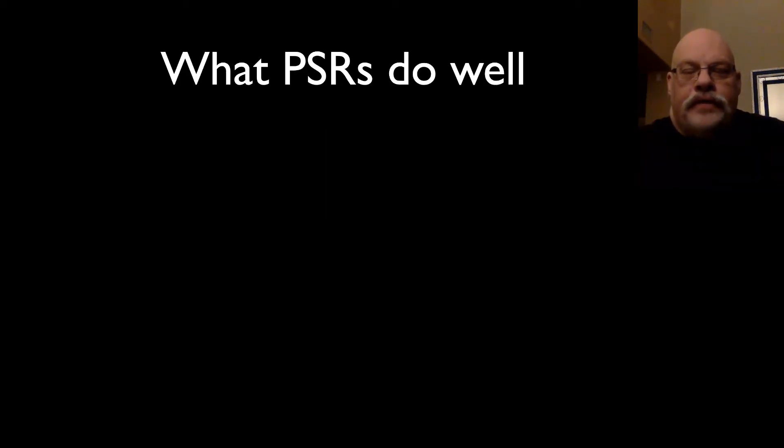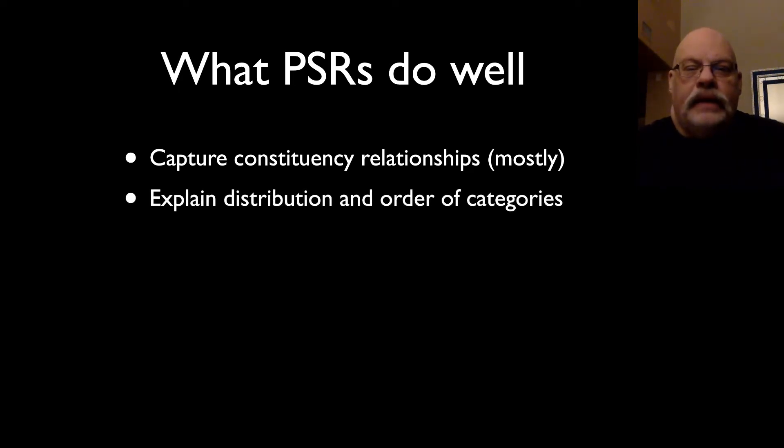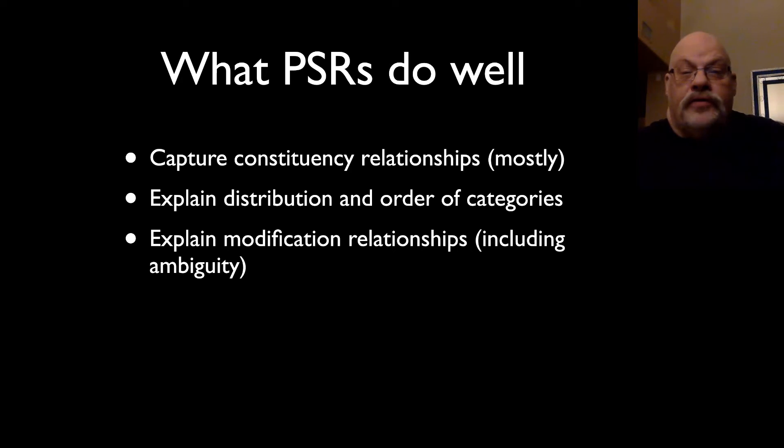Now, phrase structure rules are actually a pretty good hypothesis. They do some important things. They capture constituency relationships. They explain the distribution and order of categories. So they tell you that certain elements appear in certain positions. So noun phrases appear in the subject position. Verb phrases in English appear after that. They explain the modification relationships using the principle of modification. So they also allow us to explain things like ambiguity.